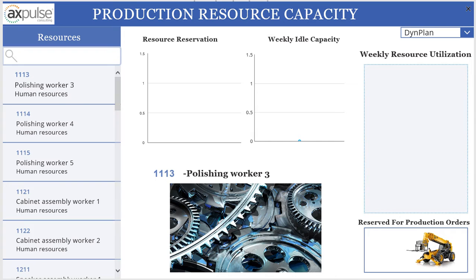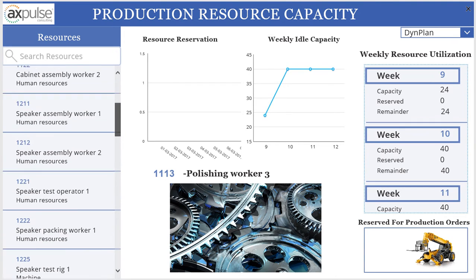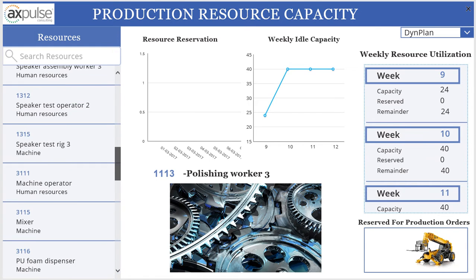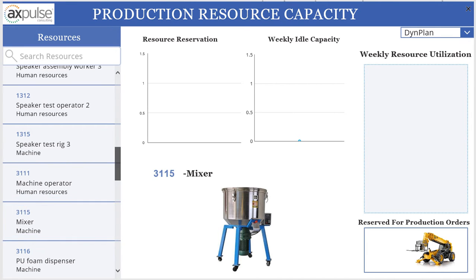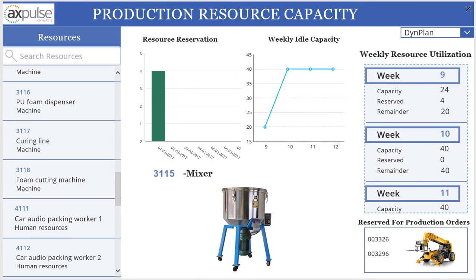Let's take a look at one of the resources and explore what we have on the right-hand side of the app. For the purpose of this demo, I will take an example that has data in my AX2012 deployment. The resource number is 315 and it's a mixer machine that is used in production.